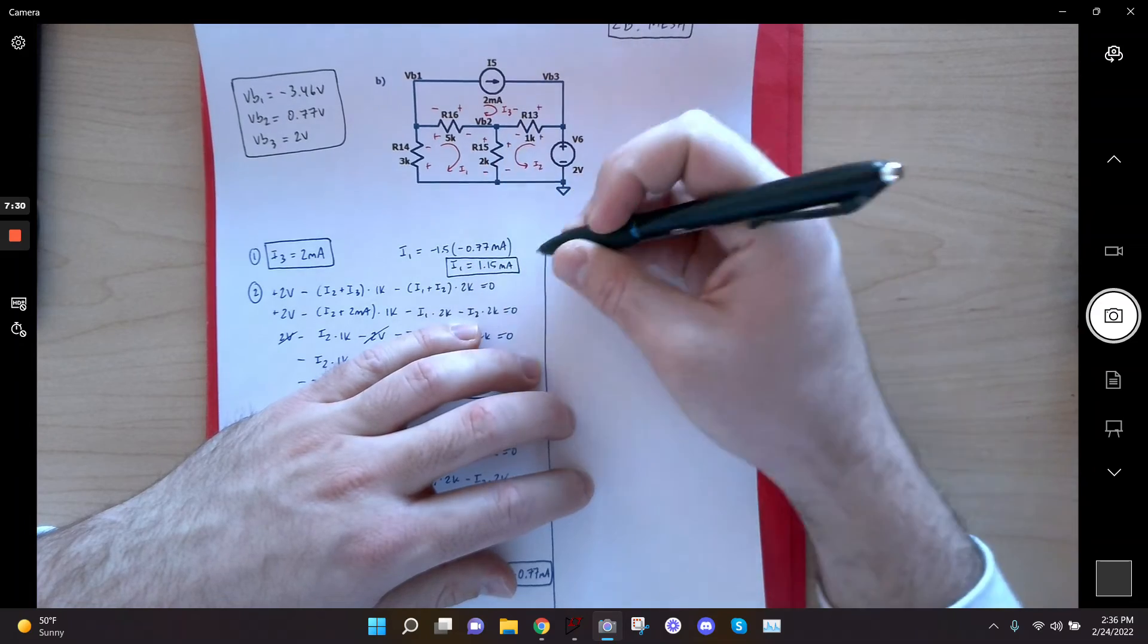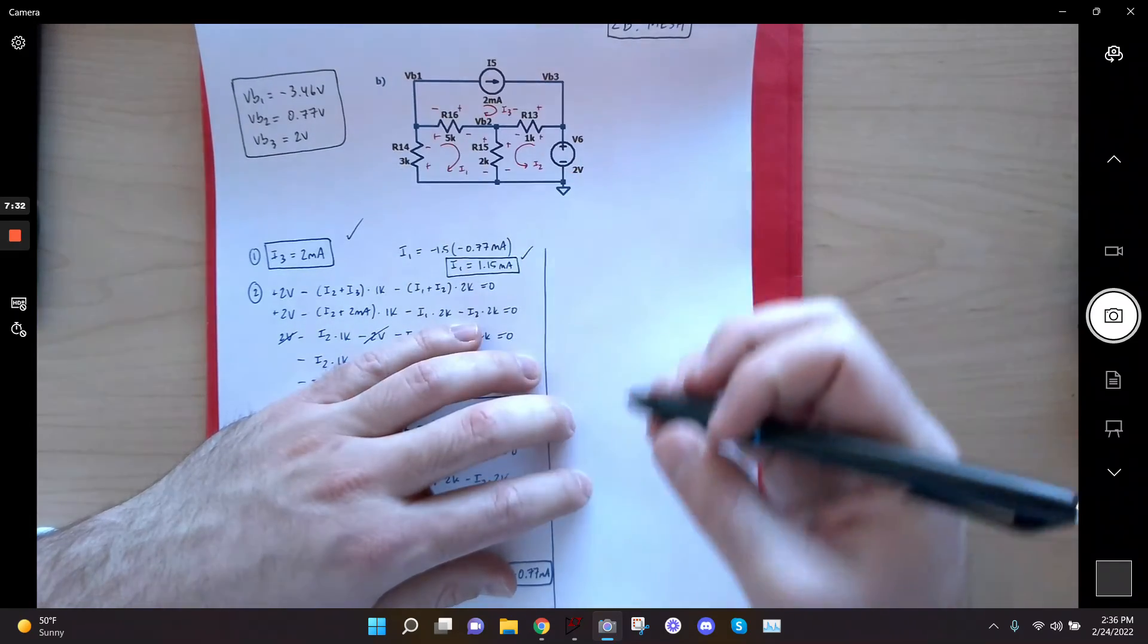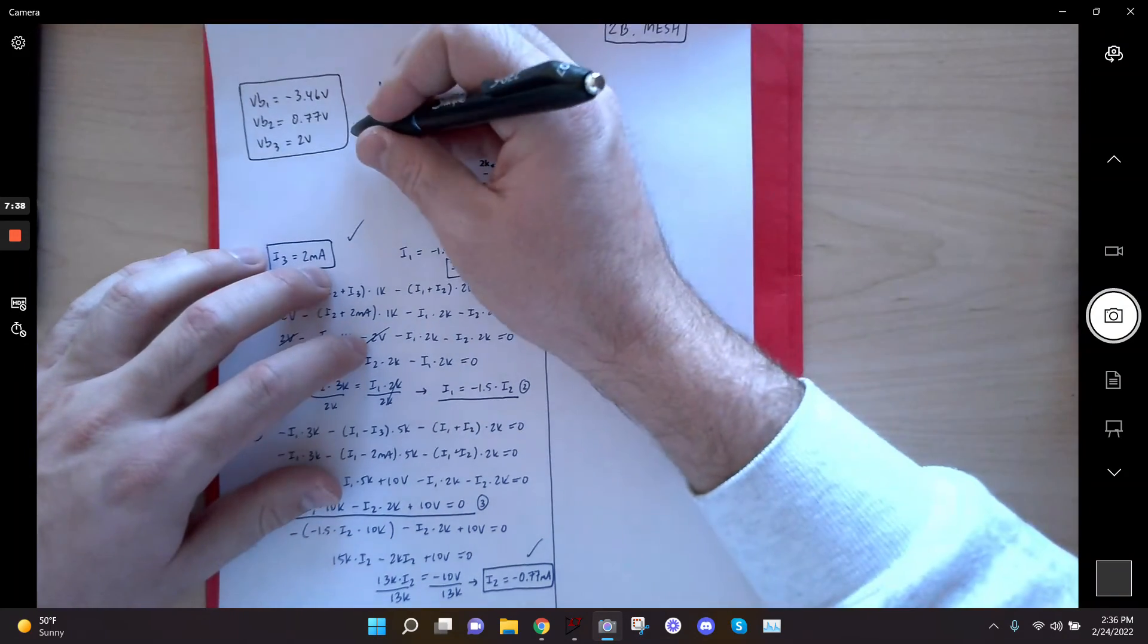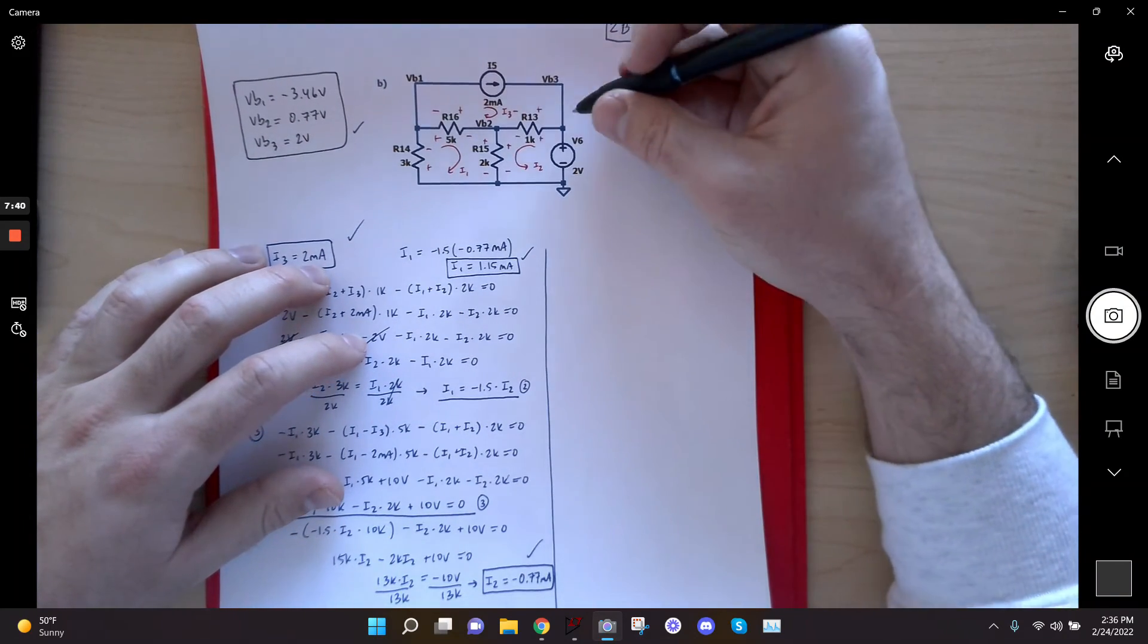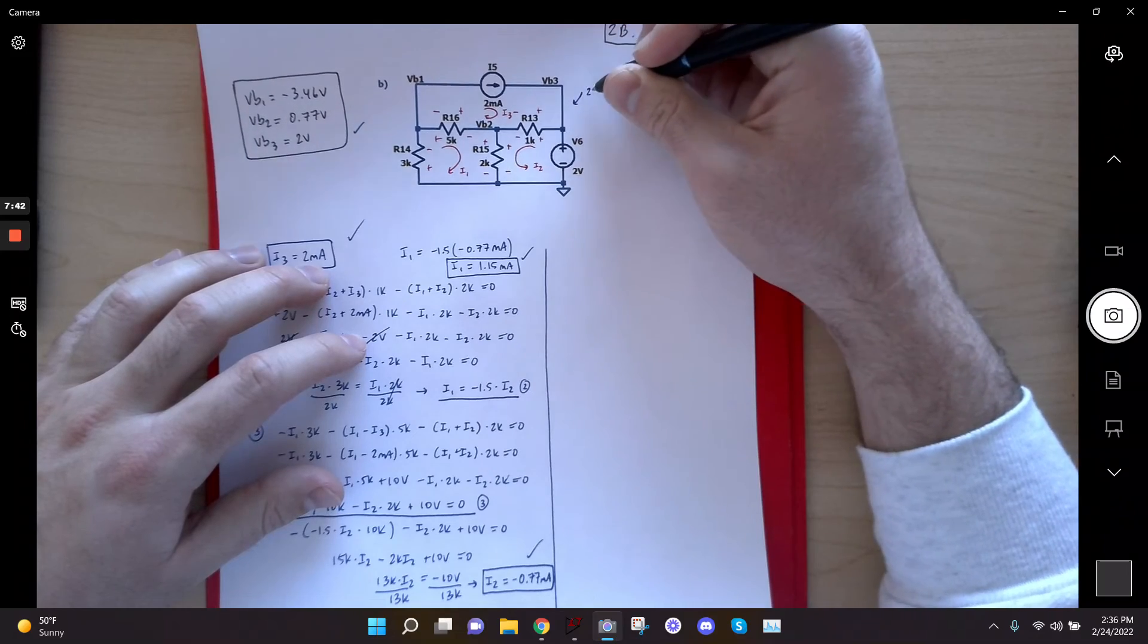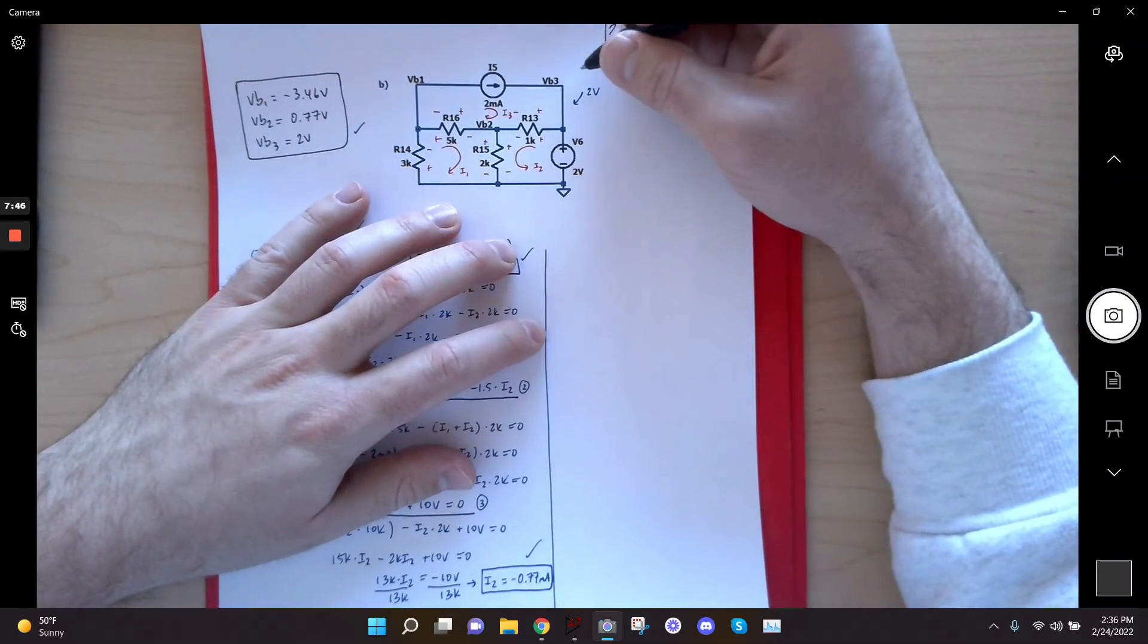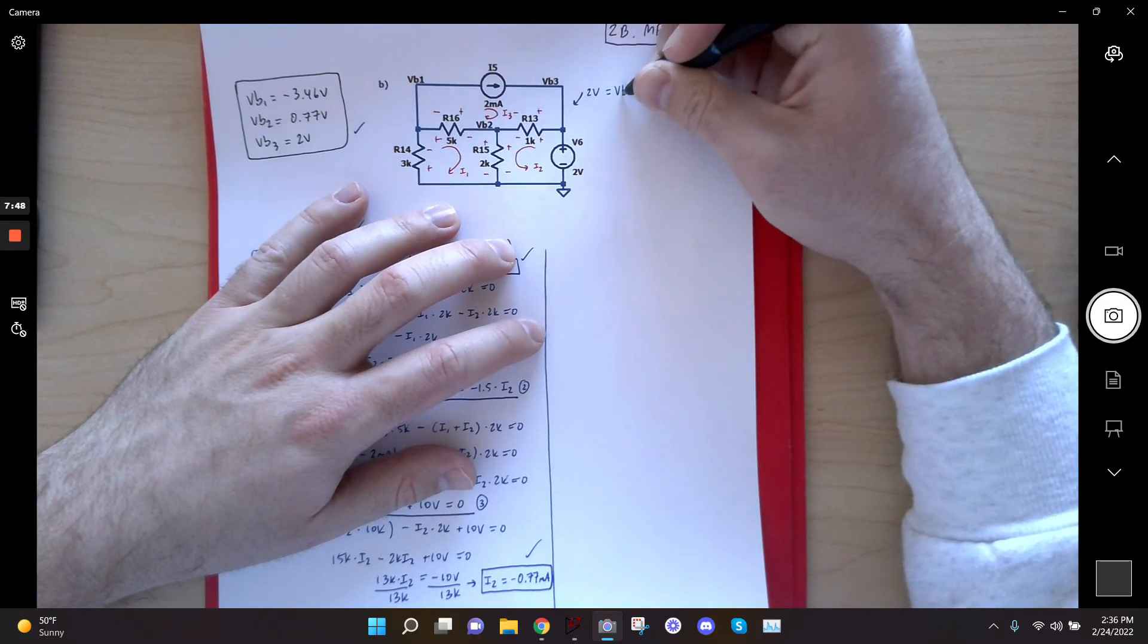I've got I3. And I also have an equation for I1 in terms of I2. So I can plug this I2 into my equation for I1 and I can solve for I1. So I'll just write that up here. I1 is basically negative 1.5 times negative 0.77 milliamps. And let's multiply that. And I get 1.15 basically. I1 is equal to 1.15 milliamps. Okay. So I've got I1, I've got I2, or sorry, I've got I3, and I've got I2 down here.